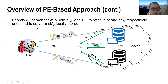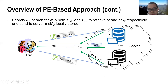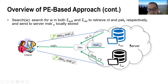When performing a search query, the client first sends the token and the remaining master secret key to the server. With the token, the server can retrieve all ciphertexts and punctured key shares matching the query. After that, the server uses the retrieved punctured key shares together with the remaining master secret key to decrypt the ciphertexts.